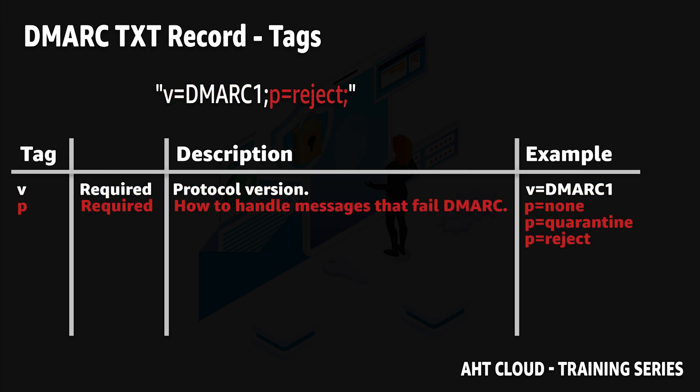The p tag allows you to specify how you want mail service providers to handle emails that are sent using your domain identity but are not aligned with your policy. You have three options: do nothing, quarantine, or reject the email. I highly recommend you set it to reject to prevent anyone from sending emails using your domain name. Both the v and p tags are required.